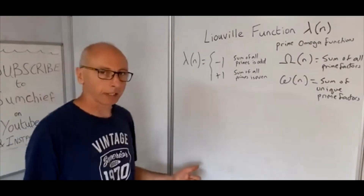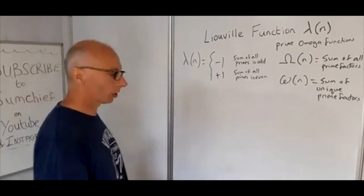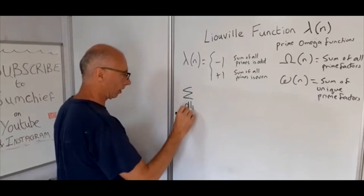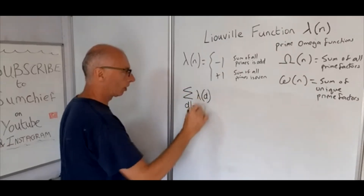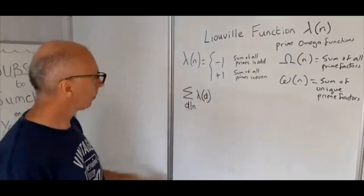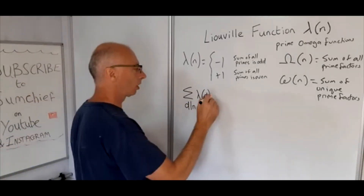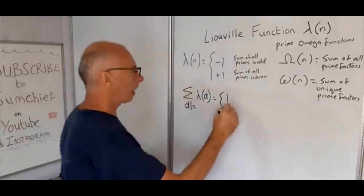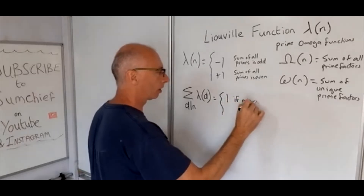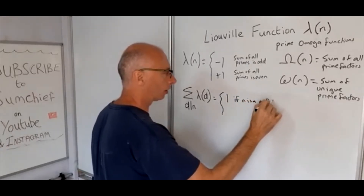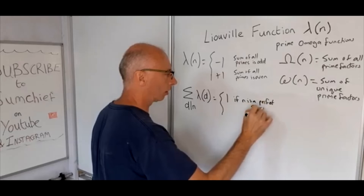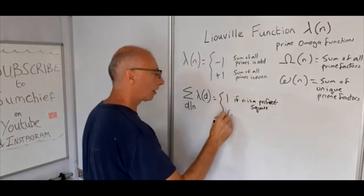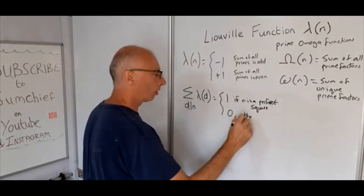Now we're going to look at another identity of the Liouville function. What we can do is sum up the divisors of n and take the Liouville function for all of the divisors. This identity gives us two different values: it takes the value 1 if n is a perfect square, and 0 for all other values.